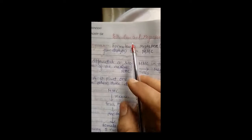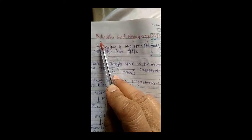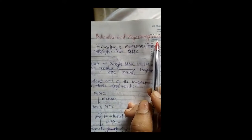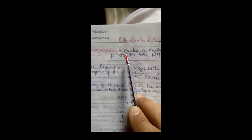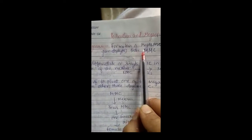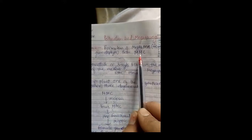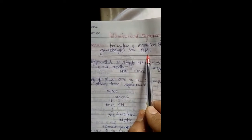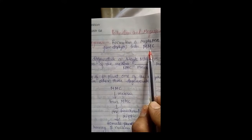Hello students, today we are discussing the second topic in the second chapter, that is pollination and megasporogenesis. What is megasporogenesis? It is the formation of megaspores or female gametophyte from the megaspore mother cell, MMC. This is known as megasporogenesis.